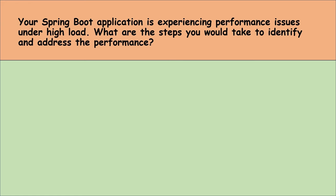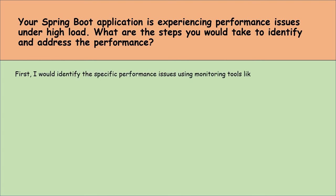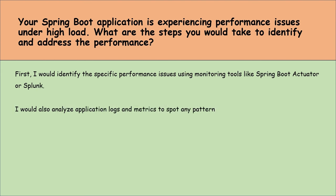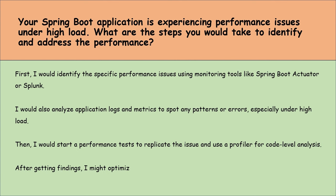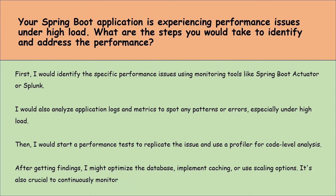Your Spring Boot application is experiencing performance issues under high load. What steps would you take to identify and address the performance issues? First, I would identify the specific performance issues using monitoring tools like Spring Boot Actuator or Splunk. Then analyze application logs and metrics to spot any patterns or errors, especially under high load. Then I would start a performance test to replicate the issue and use a profiler for code-level analysis. After getting findings, I might optimize the database, implement caching, or use scaling options. It's also crucial to continuously monitor the application to prevent further issues.